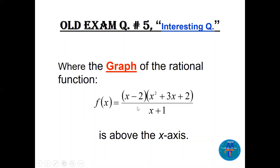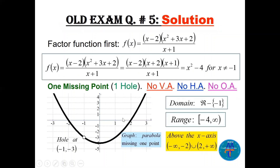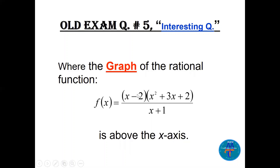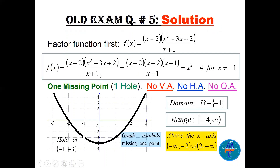Remember the advice: to graph a rational function, always check first for any cancellations. Factor the numerator x² + 3x + 2, which factors as (x + 2)(x + 1). We see (x + 1) cancels with the denominator, so we must note x ≠ -1. What remains is (x - 2)(x + 2) = x² - 4, which is a parabola.